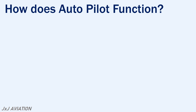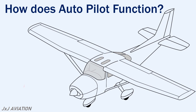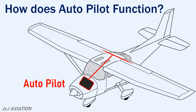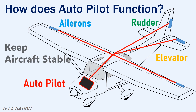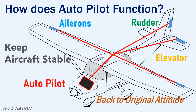How does the autopilot function? In small aircraft, the autopilot is coupled with the flight controls directly. Here the autopilot is mainly responsible for keeping the aircraft stable. If there are any disturbances, the autopilot will deflect the control surfaces as required to bring the aircraft back to its original attitude.